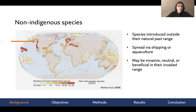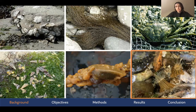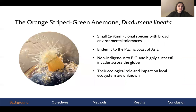To focus in on BC for a moment, these are some of the non-indigenous species that come to mind: in the top row there are some specific oysters, Sargassum muticum, and the European green crab. And in the bottom right, we have the orange-striped green sea anemone — that's Diadumene lineata — which will be the focus for the rest of the presentation.